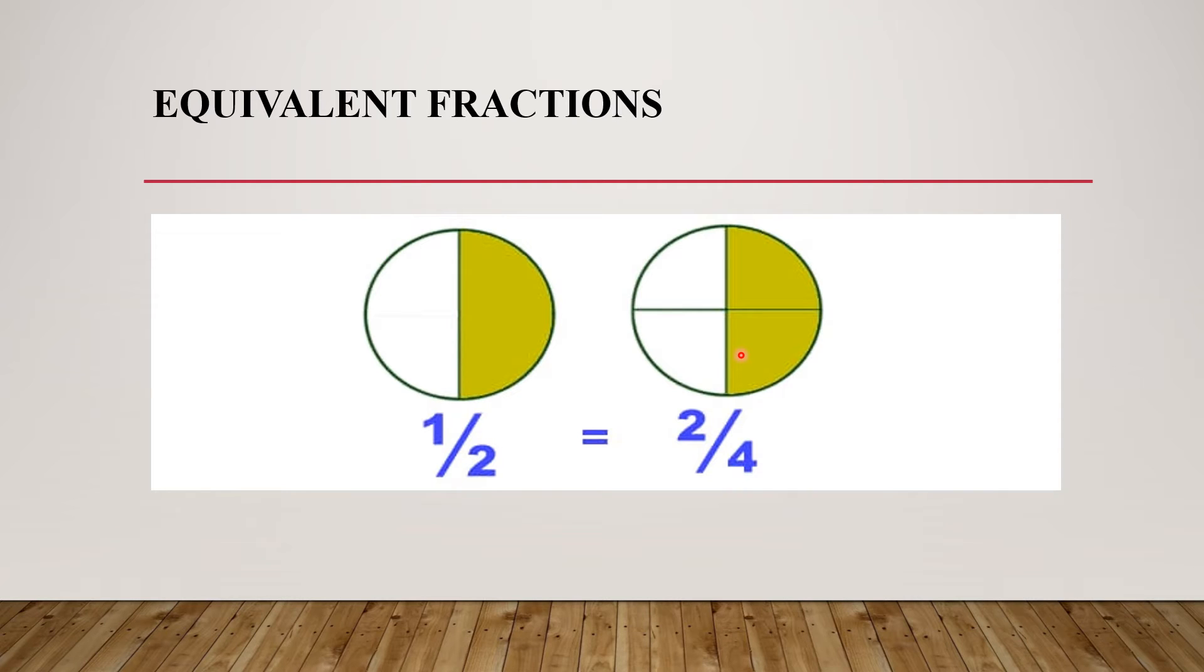And here again it is showing 4 parts. That means 2 parts are shaded. So we can write 2 by 4. And when you will compare these two diagrams you will see that half is shaded over here. Again half is shaded over here.